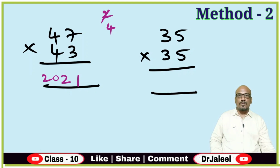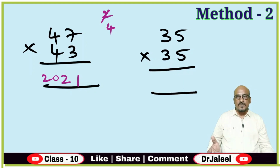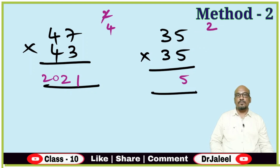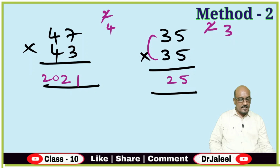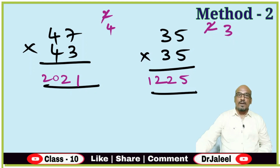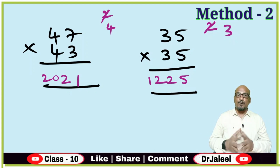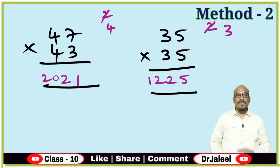For 35 × 35 with the universal method: 5 × 5 is 25, write 5 carry 2. Cross multiplication: 5 × 3 is 15 and 5 × 3 is 15. 15 plus 15 is 30, plus 2 carry forward is 32. Write 2 carry 3. Left side: 3 × 3 is 9, plus 3 carry forward is 12. Same answer. So first method is most important — use it wherever possible. Second method can be used for any numbers.